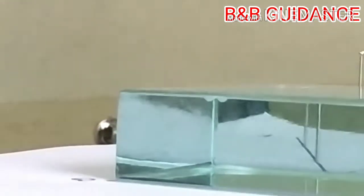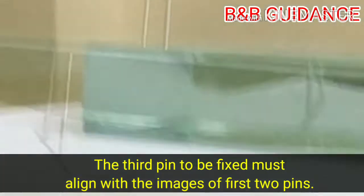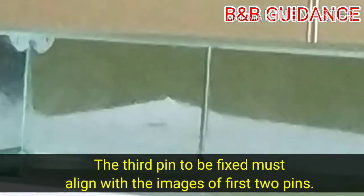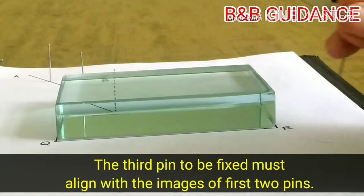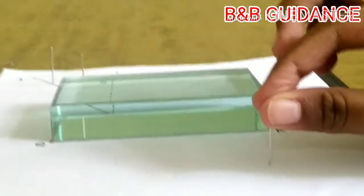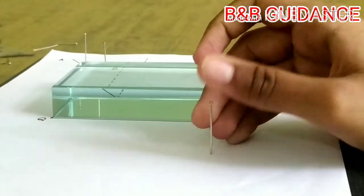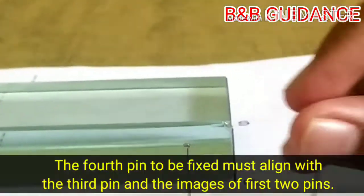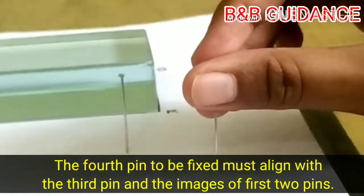So next, we are taking another pin and we must align this third pin with the image of the first two pins. So at the particular angle, the condition mentioned earlier becomes true and we should fix the pin at that point. So taking another pin, the same process must be followed.